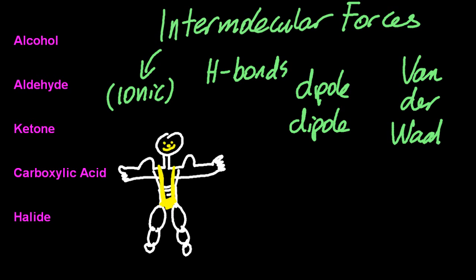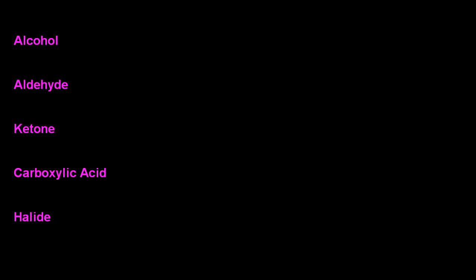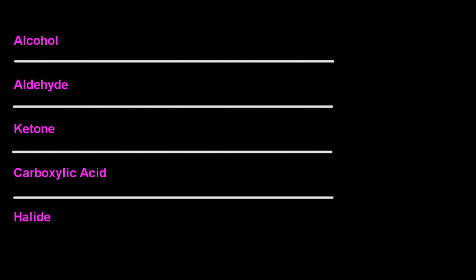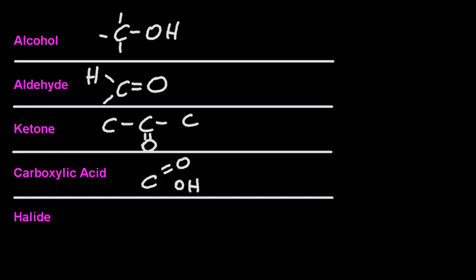Let me draw out the functional groups for these: alcohol, aldehyde, ketone must have three carbons, carboxylic acid, and halide. Looking at these here you can see that there are two with hydrogen bonds and those are the ones that have strong intermolecular bonds.